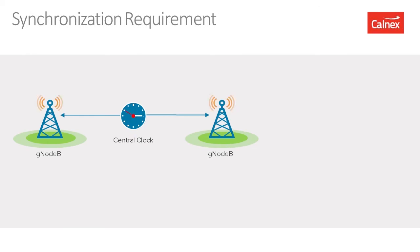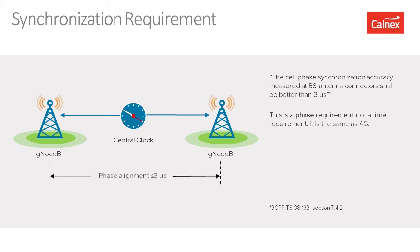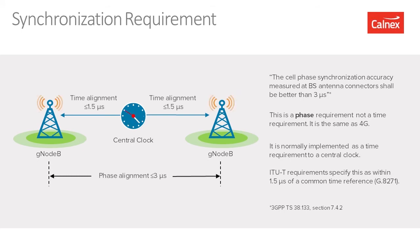I'd also like to cover 5G's influence on synchronization in terms of network architecture. The fundamental synchronization requirement as specified by 3GPP is that the phase synchronization accuracy measured at the antenna connectors shall be better than 3 microseconds. This is the same as 4G. Pictorially, when you have two gNodeBs or two antennas, the phase alignment between them must be better than 3 microseconds — generally implemented as a time requirement to a central clock. The ITU-T specifies this in G.8271, requiring the end of the network to be within 1.5 microseconds of the common time reference.